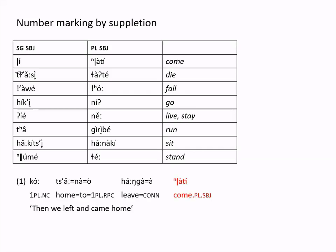Looking at this in action: 'we left and came home' — we've got one stem that doesn't change for number, hanga, and one which does. There's an indication of subject number on three of the four orthographic words: the narrative conjunction is marked for first person plural subject, the postpositional phrase has a first person plural realis pronominal clitic in agreement with the subject, and the second verb has a plural stem. So three quarters of the words have some indication that the subject is plural.